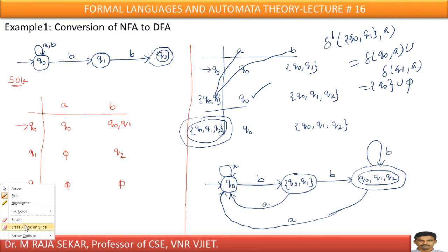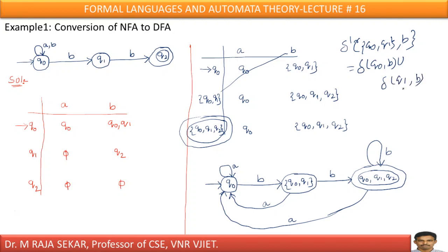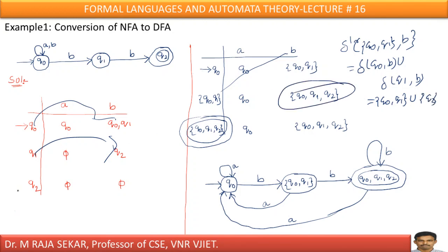In similar manner, I must find delta dash of Q0Q1 on B. The procedure is: delta of Q0 on B union delta of Q1 on B. Delta of Q0 on B means Q0Q1. Delta of Q1 on B means Q2. Therefore, taking the union of Q0Q1 and Q2, I get Q0Q1Q2.